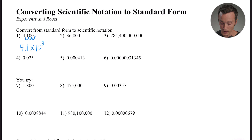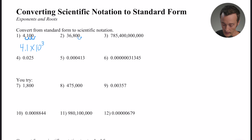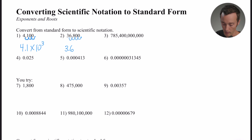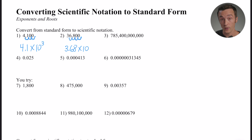Number two is 36,800. The decimal point is at the end, so let's move it until we get a number between one and ten: one, two, three places gets 368 — not quite — four places gives 3.68, which is between one and ten. So it's 3.68 times 10 to the fourth power. And 36,800 is a large number, so it's a positive four.